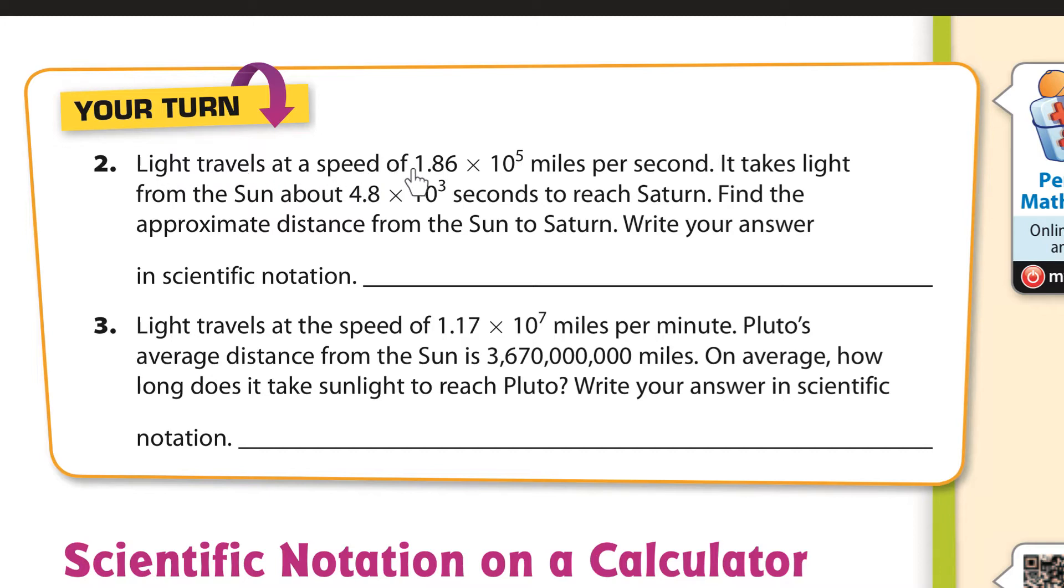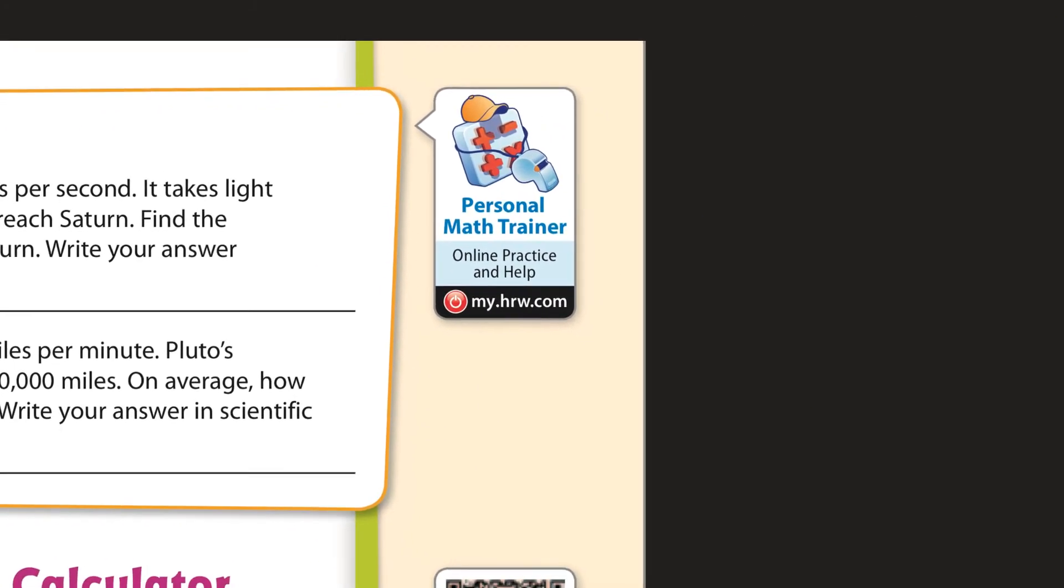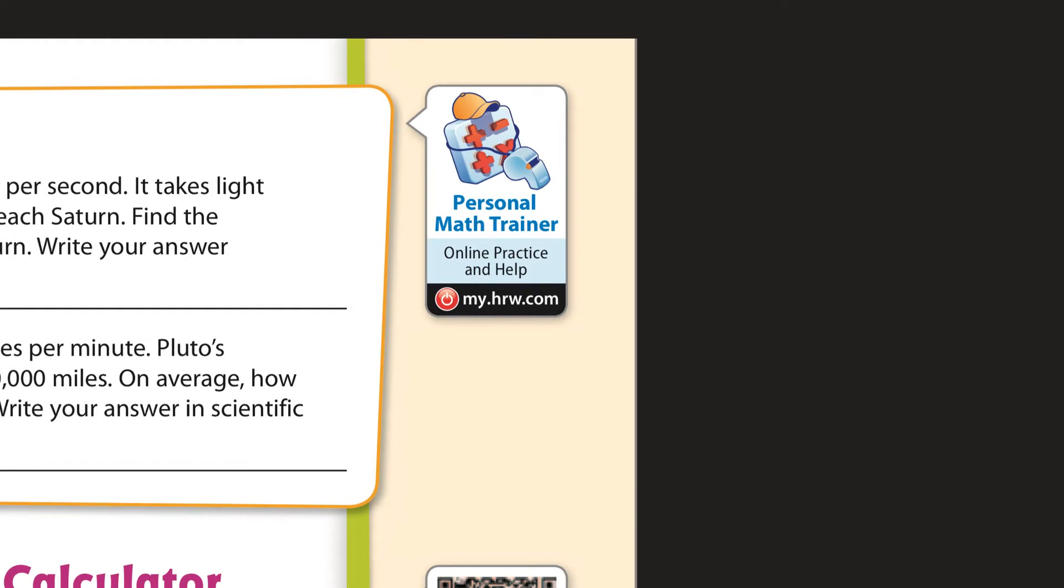Okay. So light travels at a speed of that many miles per second. It takes light from the sun that long to reach Saturn. Find the approximate distance. Well, to find the approximate distance, we come back to this. The distance is equal to the rate times the time.